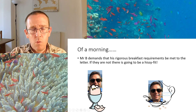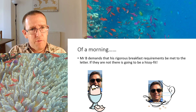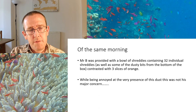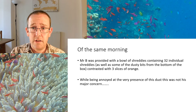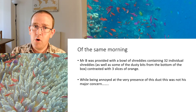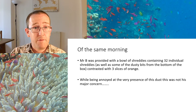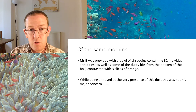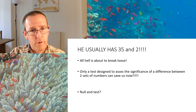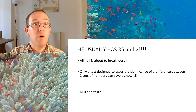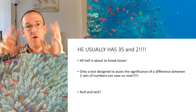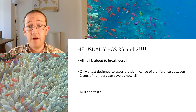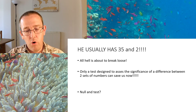The breakfast conundrum. Mr Brewer demands that his rigorous breakfast requirements are met to the letter. This particular morning he was provided with a bowl of shreddies containing 32 individual shreddies, plus some dusty bits, contrasted with three slices of orange. His normal breakfast is 35 shreddies and two slices of orange. Only a stats test designed to tell if two sets of numbers are significantly different can save us now. What is the null hypothesis, and what is the stat test you're going to use?